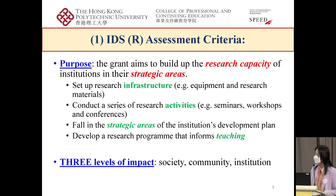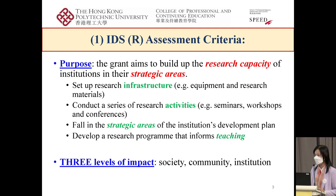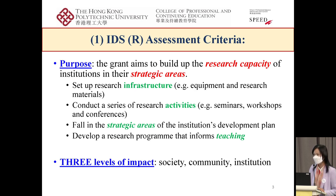Number three is to fall into strategic areas of the institution's development plan — that is, to align with the institution's strategic plan, such as developing research across disciplines. Number four is to develop a research program that informs teaching, enhancing high-quality teaching with knowledge generated from research activities. And of course, our proposal needs to have impact on the community, including different business sectors, society, and education institutions.